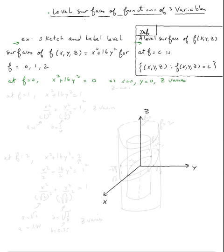What does it mean x is zero, y zero, z anything? That means you're going to get the z-axis. So for f = 0, we're getting the z-axis.